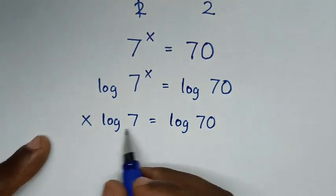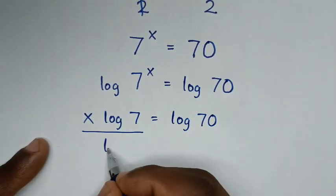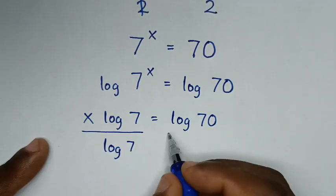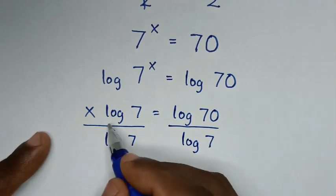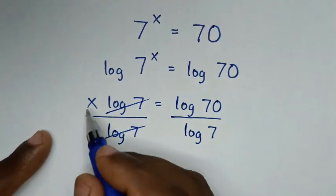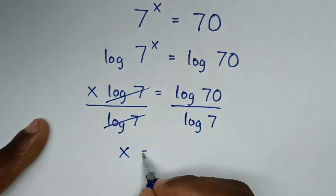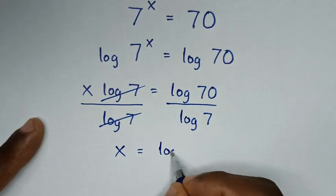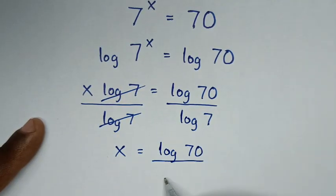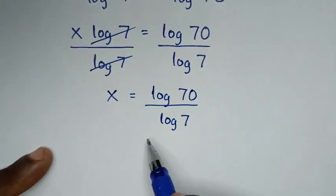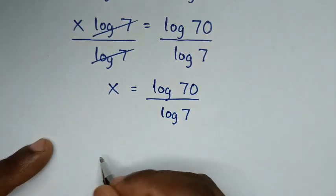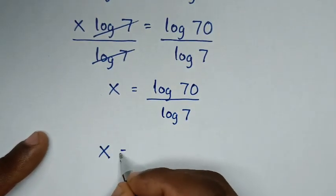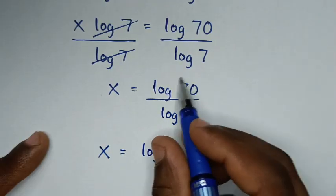Then we'll divide by log of 7 on both sides, and they will cancel. Then it will be x is equal to log of 70 over log of 7. This is not simplified further, so to simplify, it will be x is equal to log of 70.